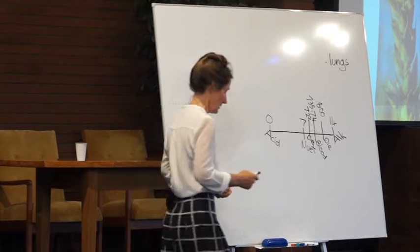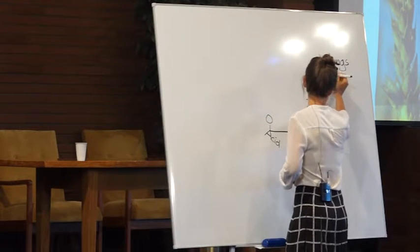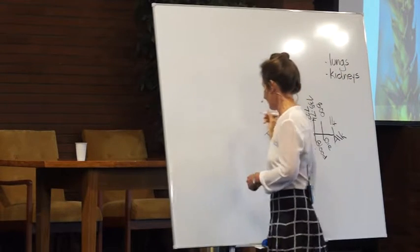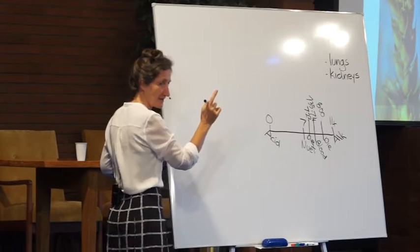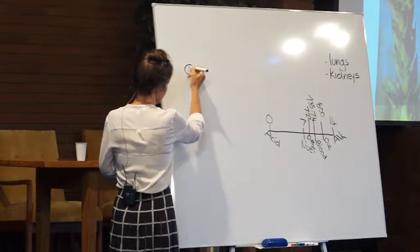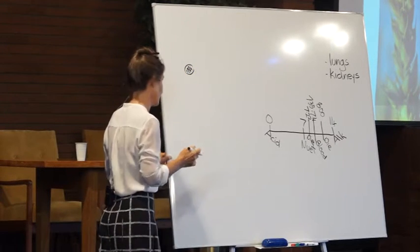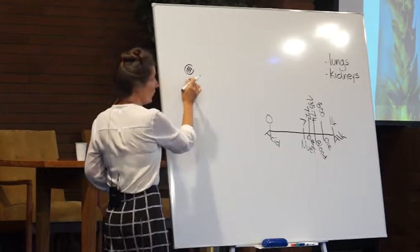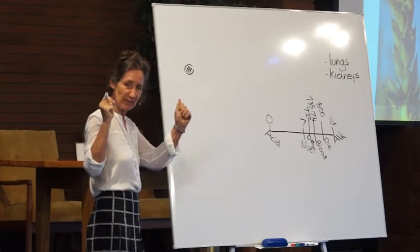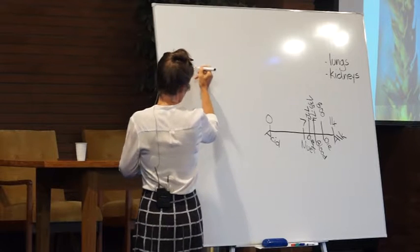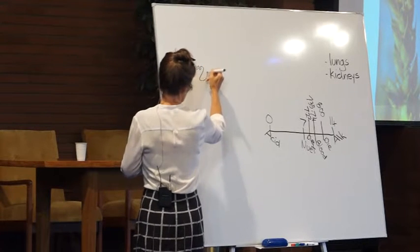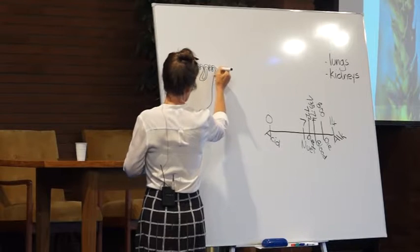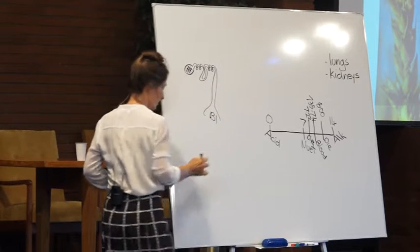The other organ that has a part to play in monitoring this is the kidneys. Now the kidneys do it in a fascinating way. This is the smallest unit in the kidney and the most important, it's a nephron. This is the little Bowman's capsule, which is the little filtering unit. There are one million in one kidney, so we have approximately two million of these. In those little filtering units, the blood is filtered, then the blood weaves around these tubules and comes out into the bladder where it's urinated out.